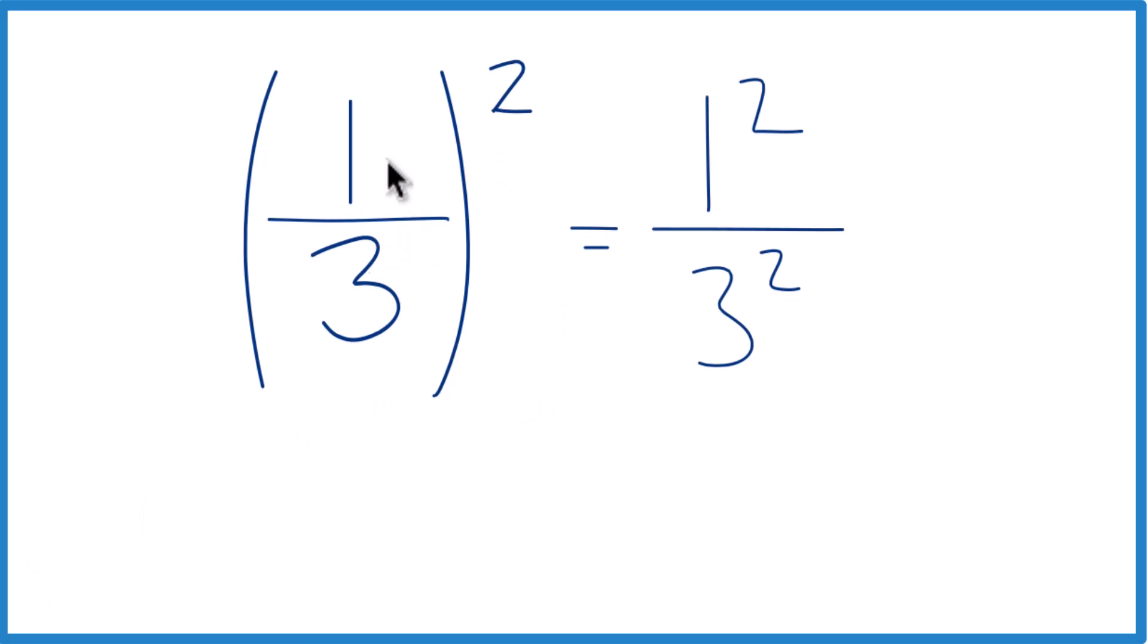Because if you think about it, one-third squared, that's just one-third times one-third. So we have our one times one, that's the one squared, and our three times three, that's the three squared.